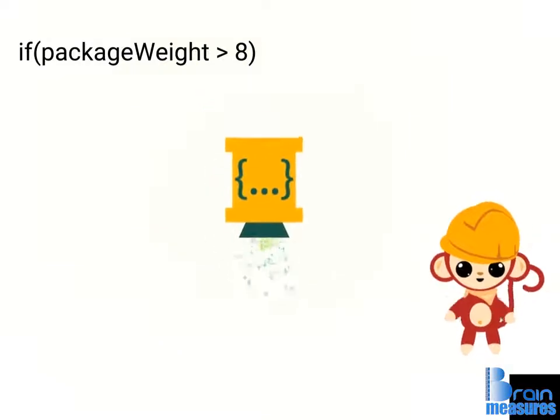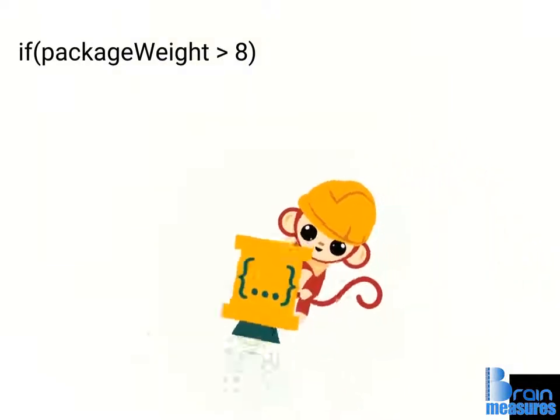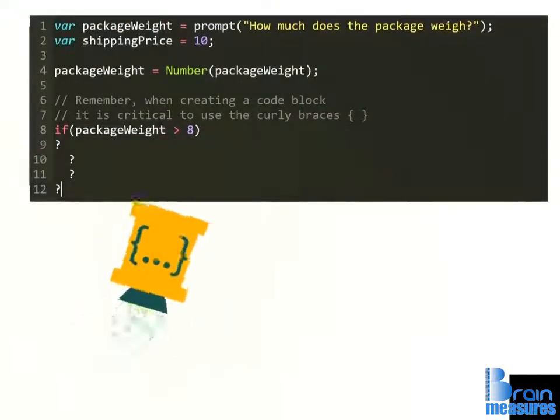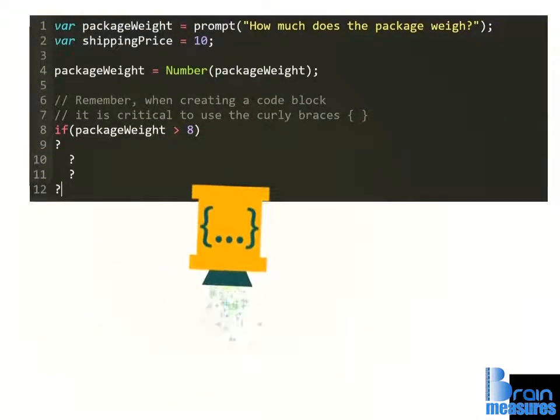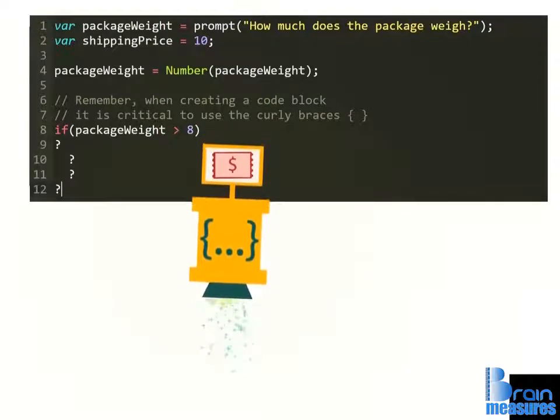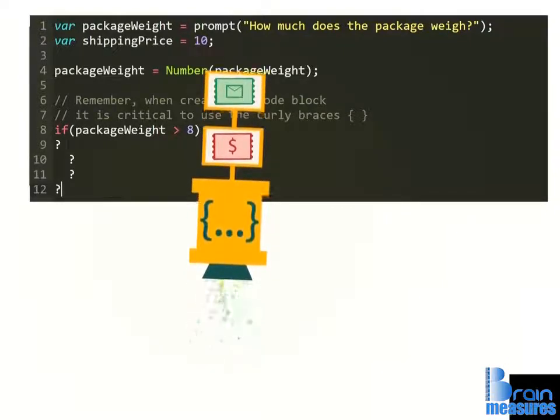Let's apply this new knowledge by creating a new code block for ByteMail's sorting machine. In the code editor, we're going to create a code block that will do two things: add $5 to the shipping price as an overage fee and display a message to warn the user.